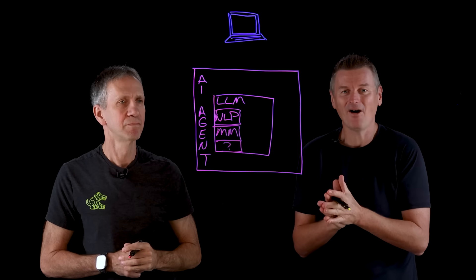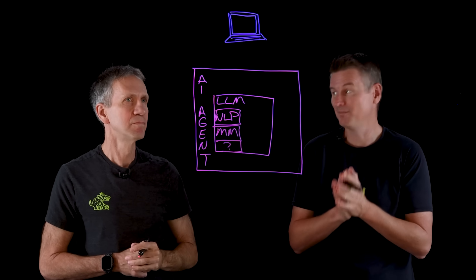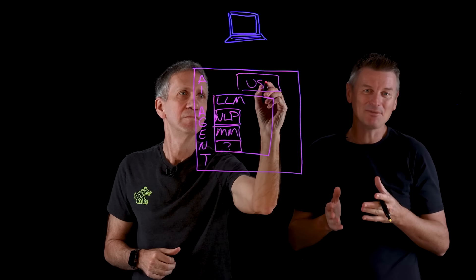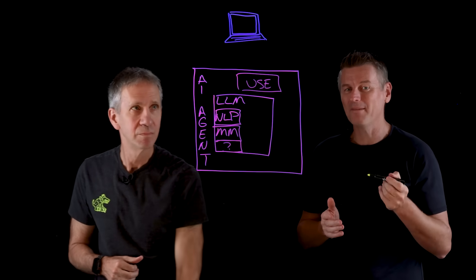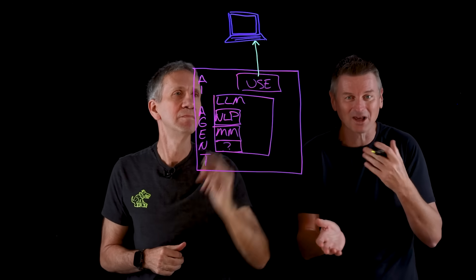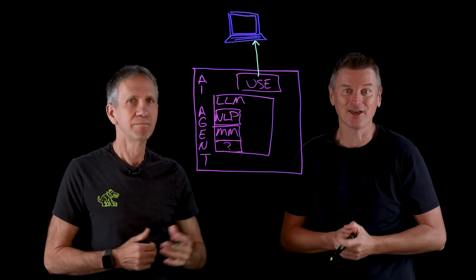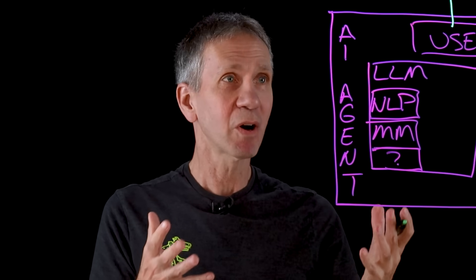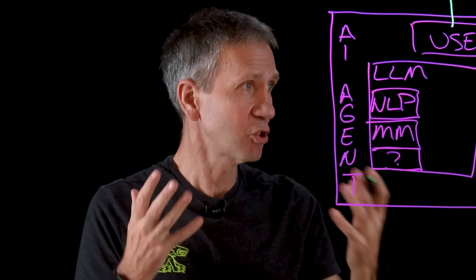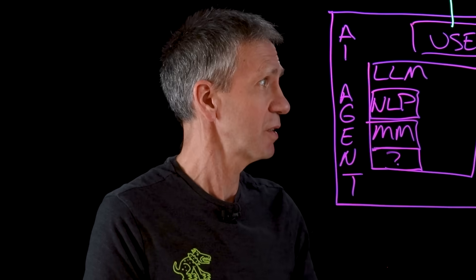Now, all of that is combined with a component called computer use. And what computer use does is it enables the agent to operate the web browser autonomously. So it can move the mouse and scroll and click and type and all that sort of thing. Okay, and I suppose you have a part where you've stored your preferences and credit card information, shipping addresses and all that sort of stuff, right?